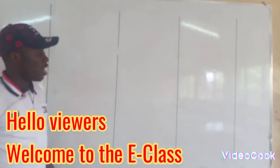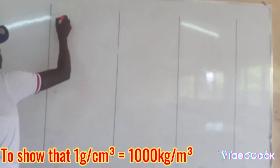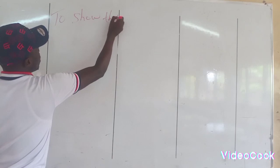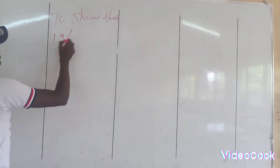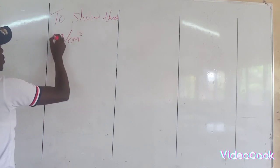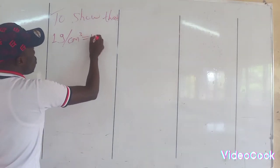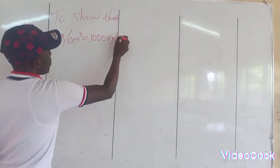Hello viewers, today I'll be showing you how to convert the unit of density. To show that 1 gram per cubic centimeter is equal to 1000 kilogram per cubic meters.